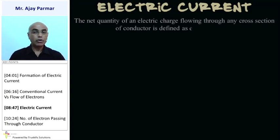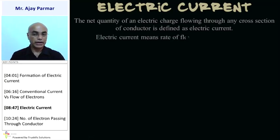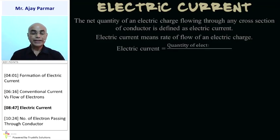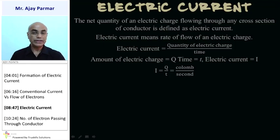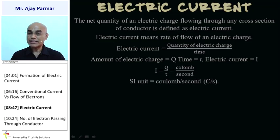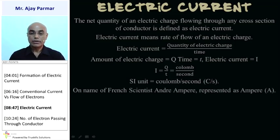Electric current is defined as the net quantity of electric charge flowing through any cross-section of a conductor — that is, it is the rate of flow of electric charge. Electric current I equals charge Q divided by time T: I = Q/T. The unit of electric charge is Coulomb and time is second, so the SI unit of electric current is Coulomb per second, which after the scientist André Ampere is called the Ampere.